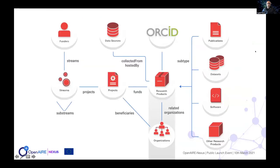The basic data model has at its center research products, which are declined as publications, datasets, software, and what we call other research products — objects that do not fall under other categories. Research products are then linked to funding from projects, which are further categorized by funding streams, and projects in which organizations participate. From this conceptual model, the graph is materialized according to different use cases.